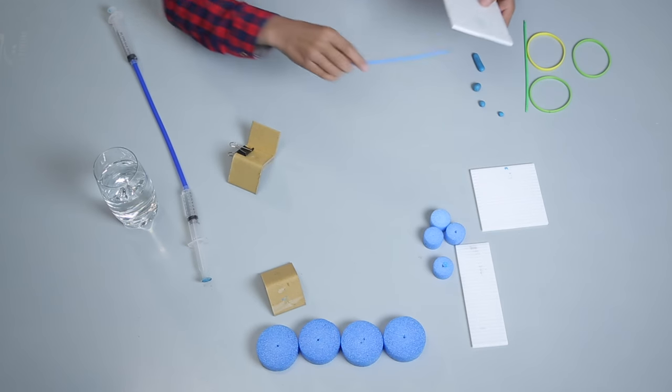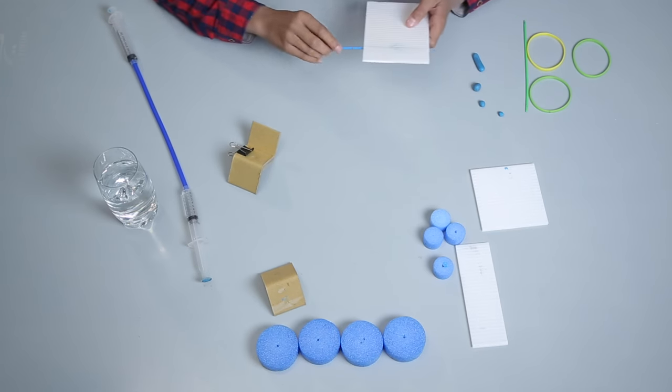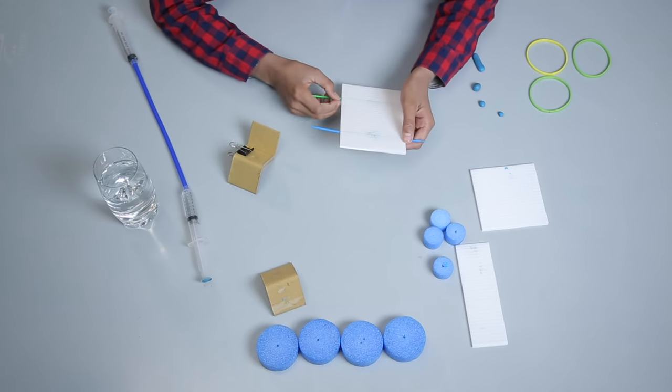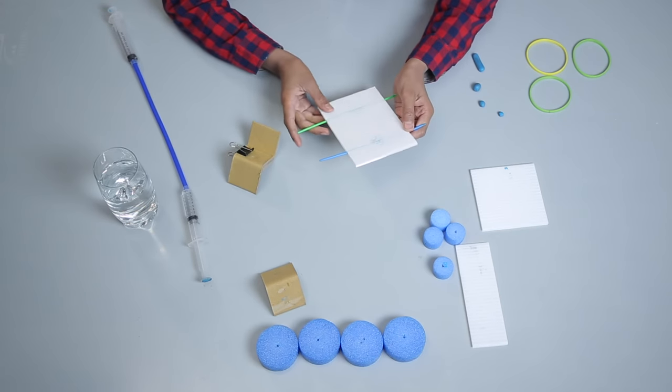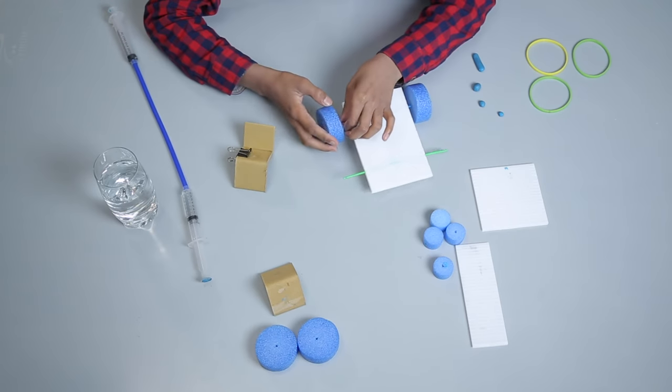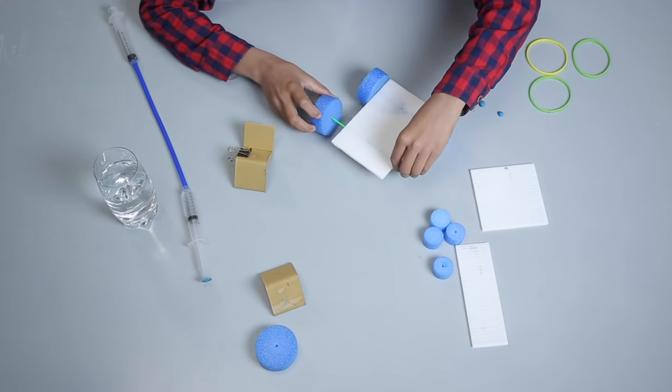Now take Corflute and pass two plastic sticks through it. Attach four foam wheels on each end of a plastic stick to make wheels.